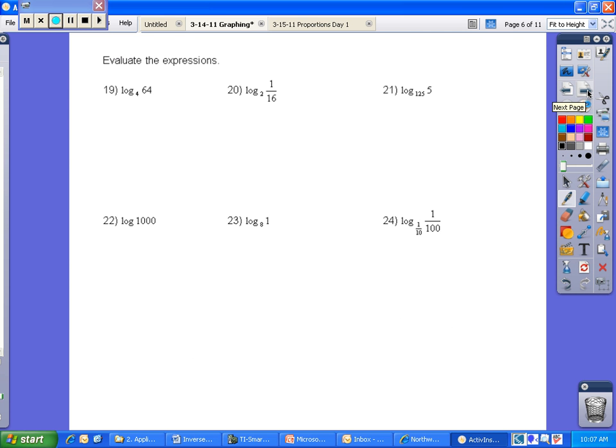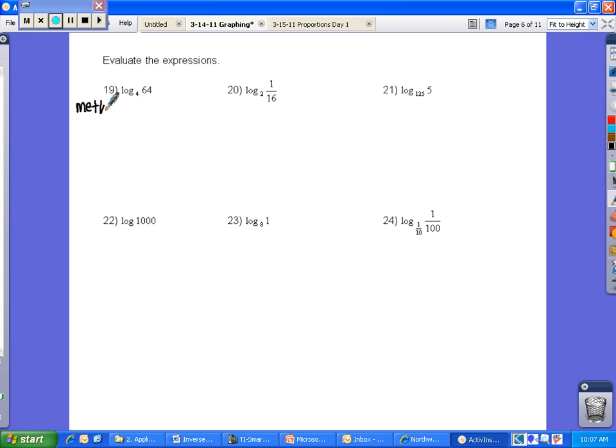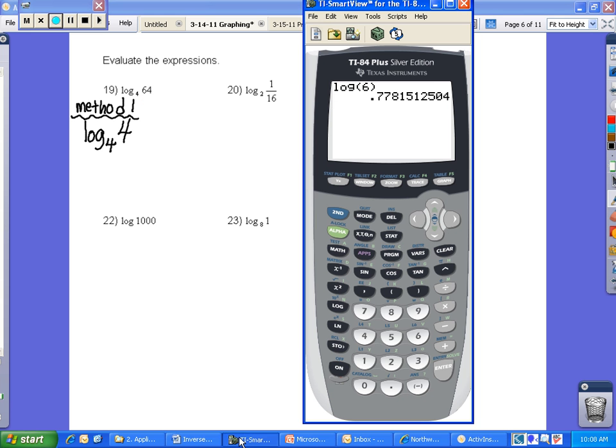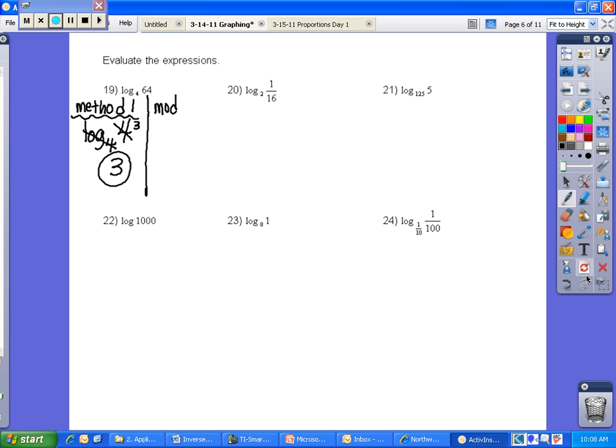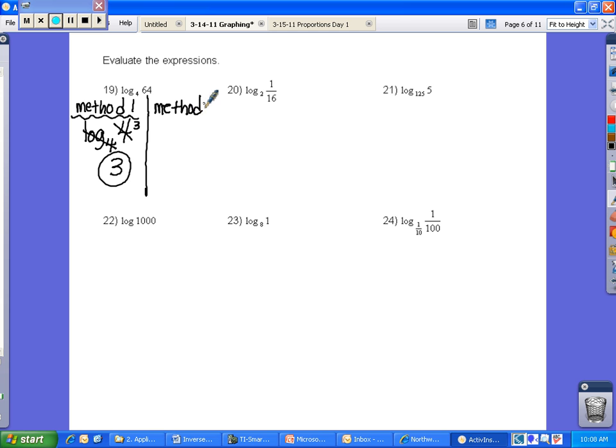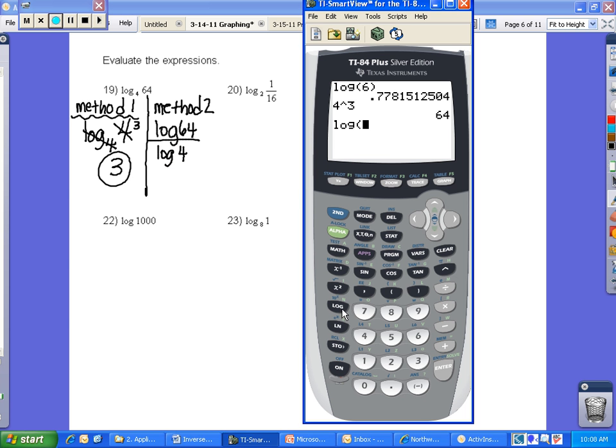Moving on, evaluating the expressions. There's two ways you can do this. Method one would be to rewrite so that you have the same log base as exponential base. So you could say log base 4, 4 to what power equals 64? Well, if I go to my calculator and put in 4 to the power of 3, I would get 64. So I could say log base 4 of 4 cubed is 64. Now I know that the log 4 and the base 4 cancel, and I'm just left with 3. That's one of your properties. Method two is to use your change of base. So you would rewrite this as the log of 64 over the log of 4. Remember the base, your log base goes in on the bottom. You can just use your calculator. You can say log 64 divided by log 4, hit enter, and you'll get 3.